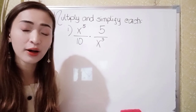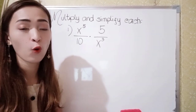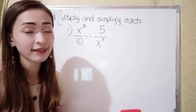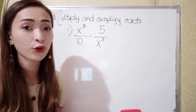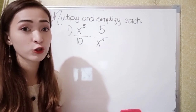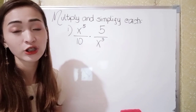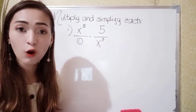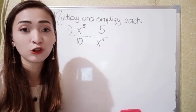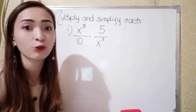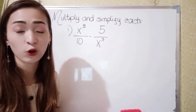For number one, we have x raised to the 5th power over 10, times 5 over x cubed. When multiplying a rational expression, what we're going to do is just multiply the numerator by the numerator and then the denominator by the denominator.